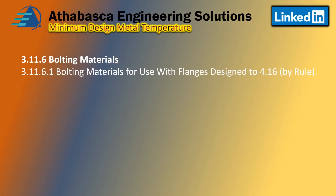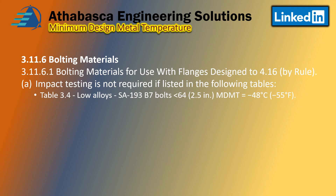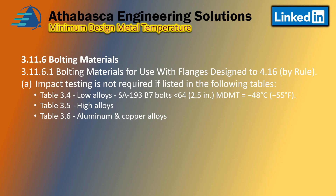For bolting materials — used with flanges designed per 4-16 — Part 4 of Section 8, Division 2 is design by rules and Part 5 is design by analysis. Impact testing is not required if listed in the following tables. Table 3 for low alloy bolts: a common one is SA-193 B7. If your bolt size is less than 2.5 inches, the MDMT listing is minus 48°C. High alloy bolting materials are in Table 3-5. Table 3-6 covers aluminum and copper alloys, and Table 3-7 covers nickel and nickel alloys.